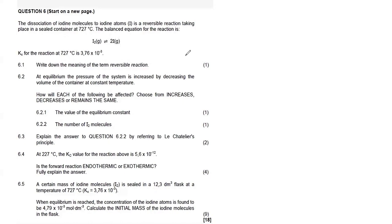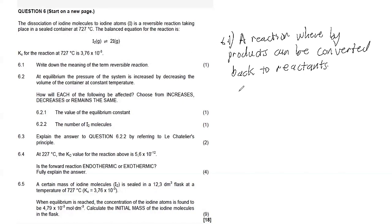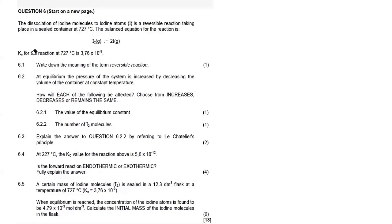Question 6.1 asks us to write down the meaning of the term reversible reaction. Our definition is: a reaction whereby products can be converted back to reactants. Then 6.2 says at equilibrium the pressure of the system is increased by decreasing the volume.